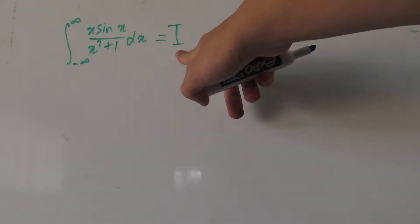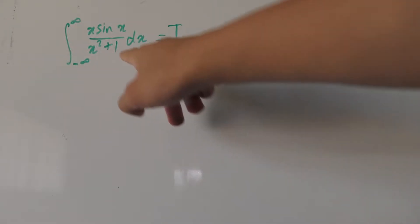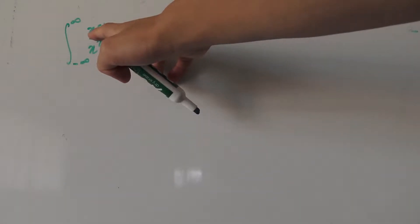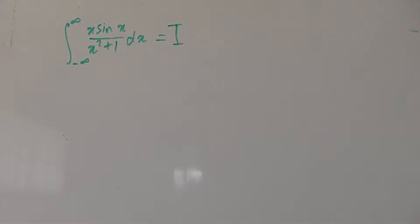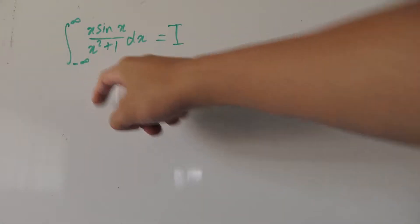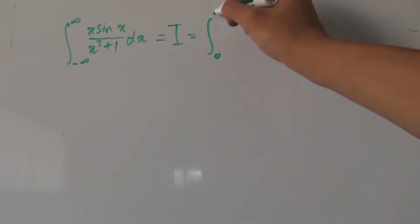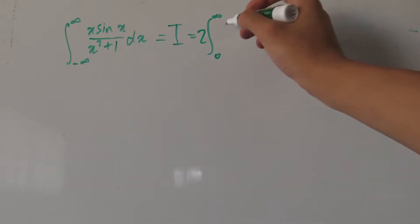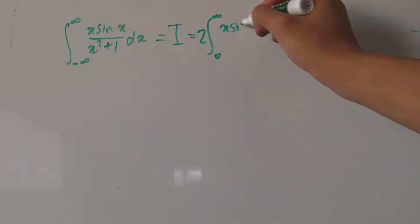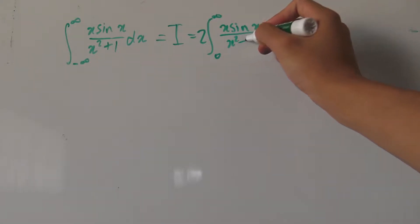I've already called this integral I, so we know what we're solving later on. Looking at the integrand, we have three distinct functions: x, sine of x, and x squared plus 1 in the denominator. x is an odd function, sine is also an odd function, and an odd function times an odd function gives an even function. x squared plus 1 is even, so all in all we have an even integrand over symmetrical bounds. Using the even function identity, we can split the interval in half: from 0 to infinity, multiplying by 2, with the same integrand x times sine of x over x squared plus 1 dx.